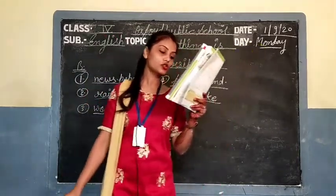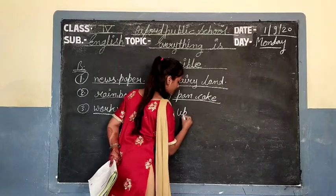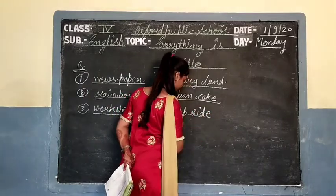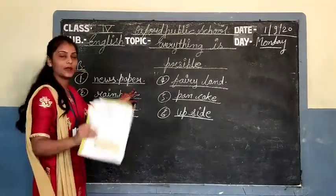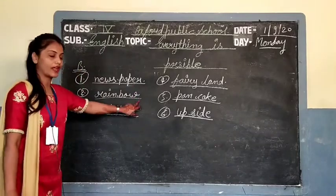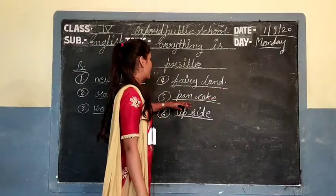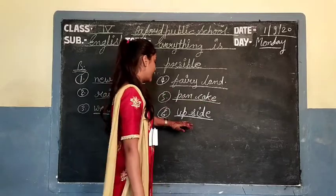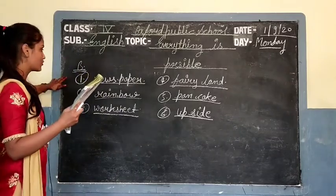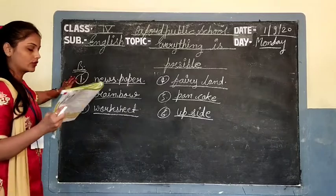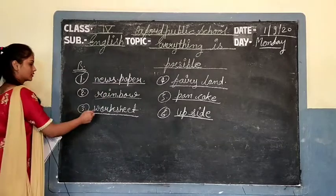Sixth: 'Anjali was unable to solve the puzzle because the blocks were placed ___ down' — यहाँ हो जाएगा upside. तो यह जो words हैं, यह two words को combine करके बने: news plus paper = newspaper, rain plus bow = rainbow, work plus sheet = worksheet, fairy plus land = fairyland, pan plus cake = pancake, and up plus side = upside. यह होंगे compound words — जो B में fill-up दिया है उसमें fill करने, आप अपनी नीज बुक में fill करोगे।